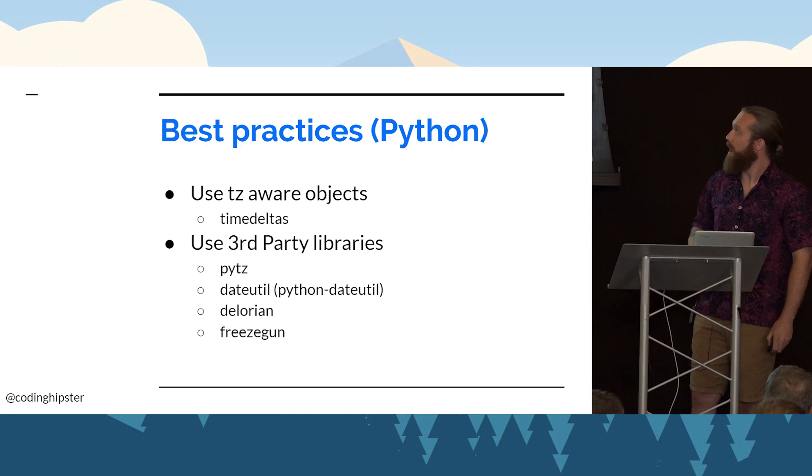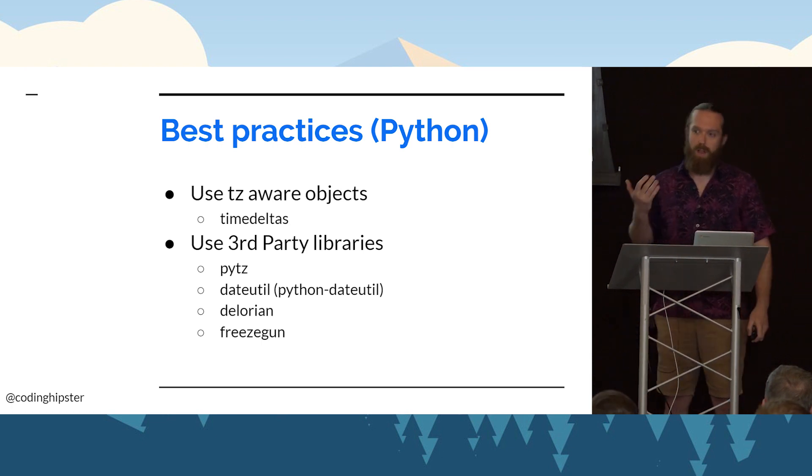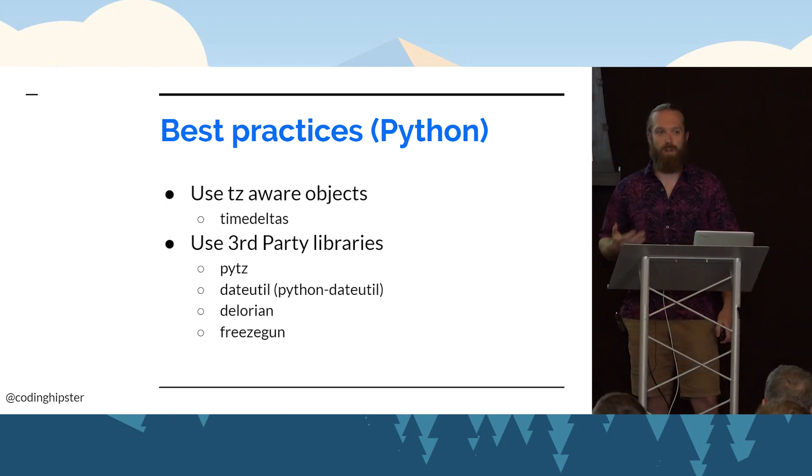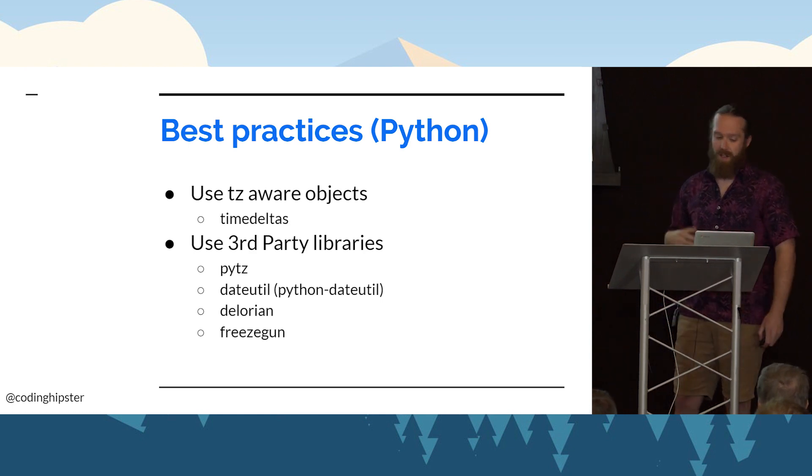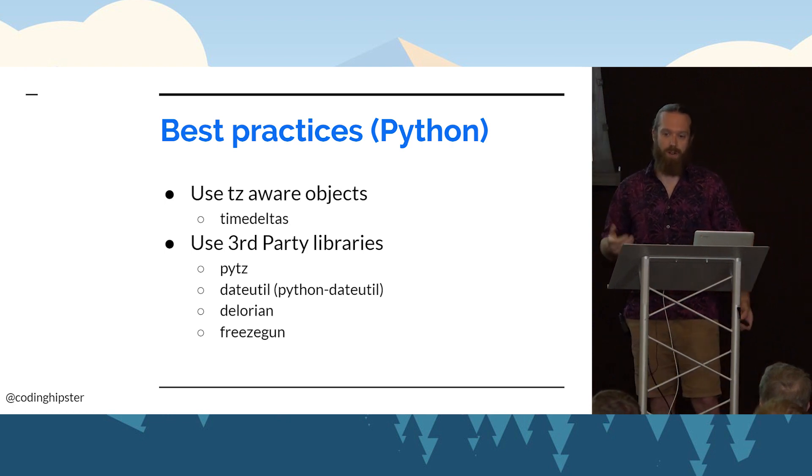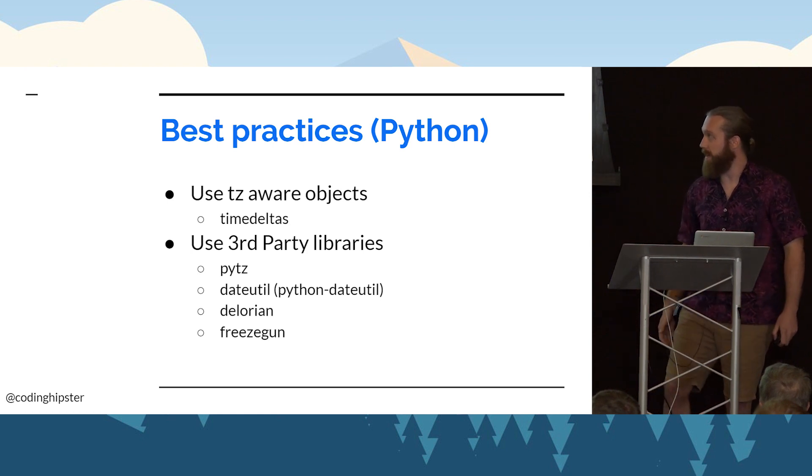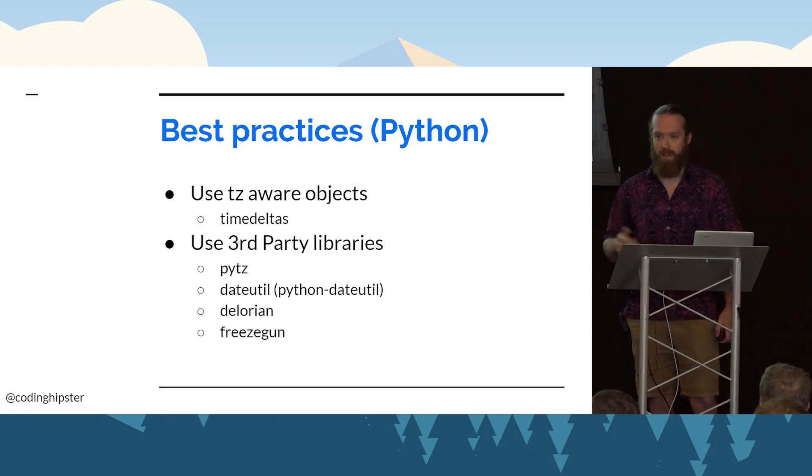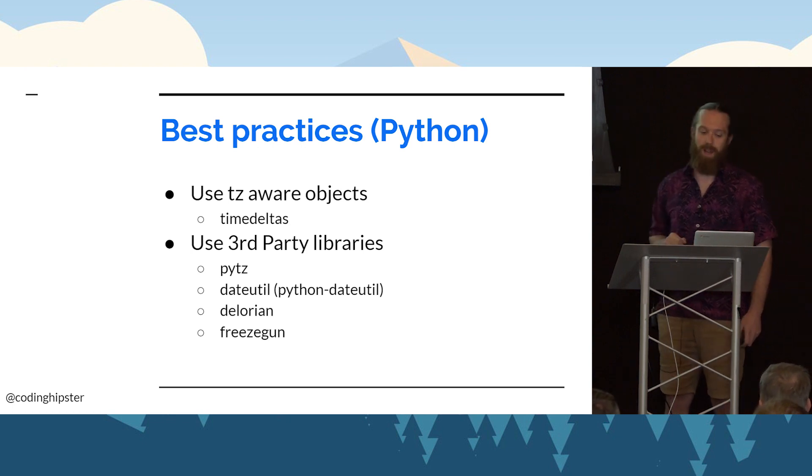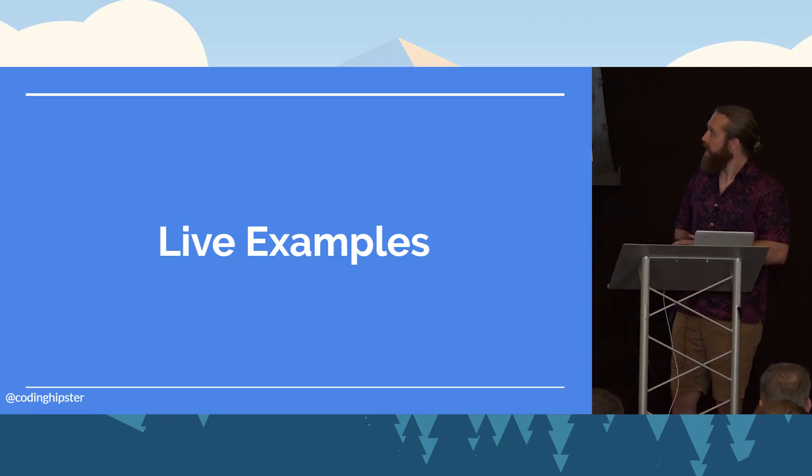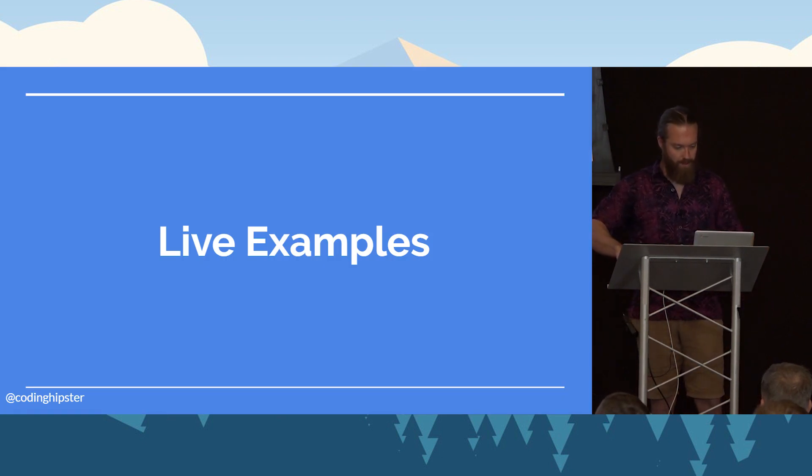Best practices in Python: try to always use timezone aware objects. Don't use magic numbers as a good example. Don't say month plus one - that's going to get you into trouble when you hit December. Day plus one will also get you in trouble on the last day of the month. There's also a ton of good libraries out there for integrating with timezone objects. PYTZ is kind of the gold standard for timezones. DateUtil has a lot of nice functions. I already mentioned freeze gun for testing. And then DeLorean, which is one I actually haven't used but I've read good things and it has a really great name. With that, I figured I would jump into a couple live examples to demonstrate some of these things.